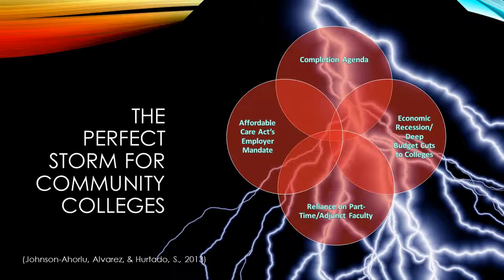We are beginning to see a perfect storm brewing as four distinct variables converge. First, President Obama set an ambitious completion agenda goal that by 2020 America will once again have the highest proportion of college graduates in the world. Currently, the U.S. ranks 12th globally in degree completion, so moving to first place will take enormous effort. Degree completion in the United States is already alarming, with a very large percentage of students entering colleges who do not graduate. Running counter to this goal is the nationwide economic recession, which has caused a majority of states to cut spending on public education, undermining the goal to increase degree production.